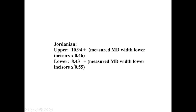For the lower arch, we also use the width of the lower incisors — so the reference is the lower incisor width for both arches. We take the mesiodistal width of all four lower incisors added together, multiply this by 0.55, then add 8.43. The total value represents the mesiodistal width of the canine, first premolar, and second premolar on one side only.